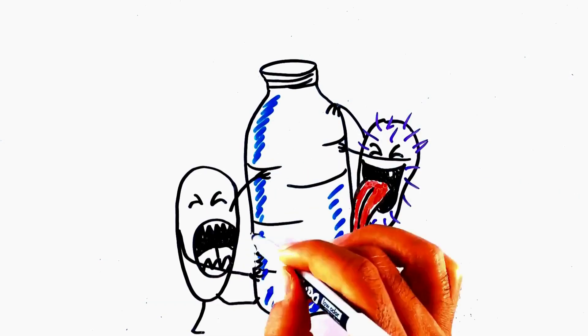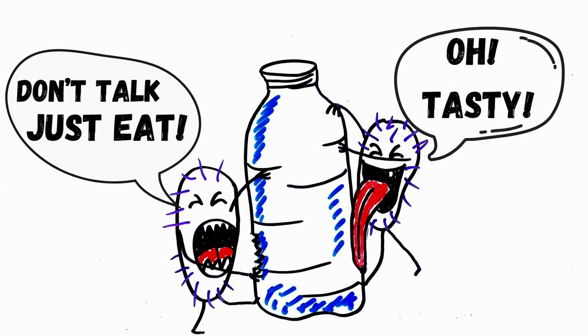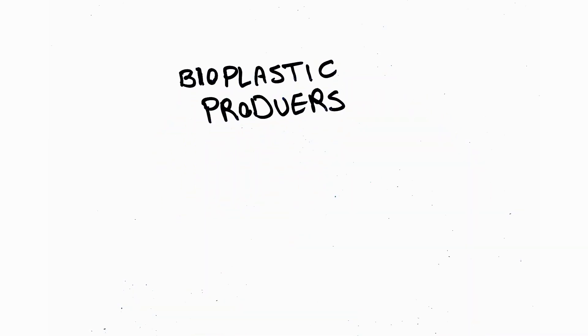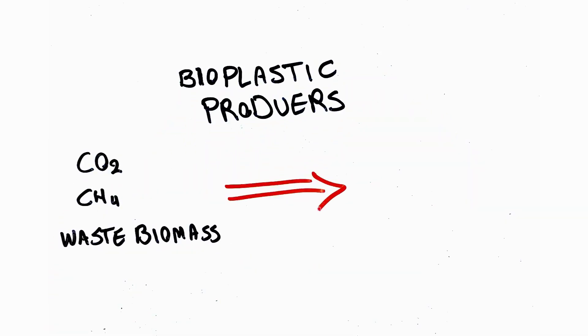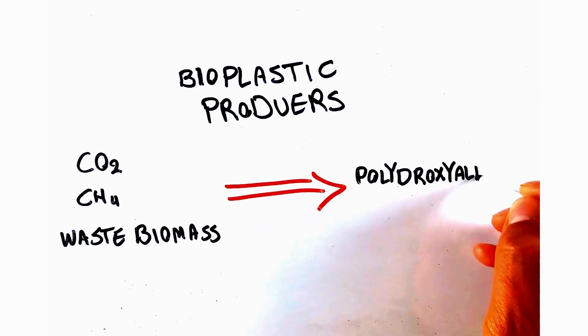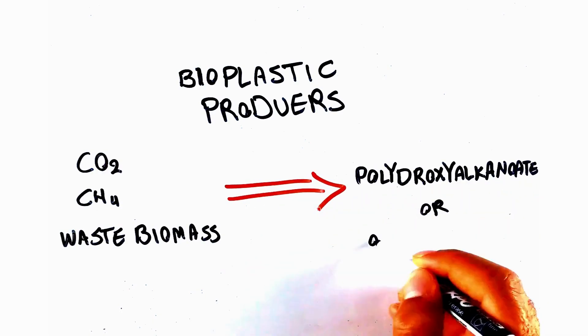Plastics can be consumed by biodegrader bacteria to create molecules that are useful in manufacturing new consumables. On the other hand, some bacteria can use a variety of feedstocks, including carbon dioxide, methane, or waste biomass to produce bioplastics, thus closing the loop.